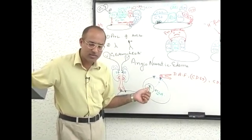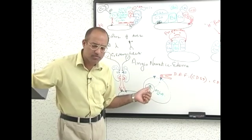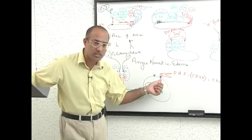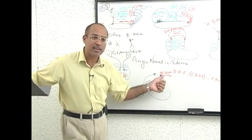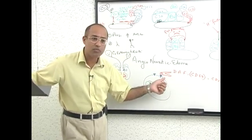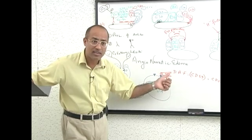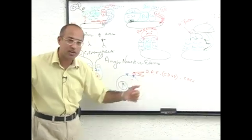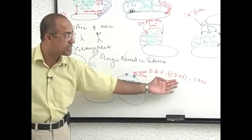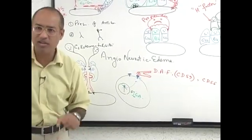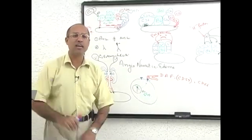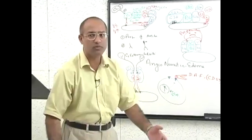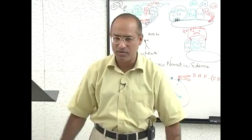Due to the mutation, we are unable to produce those proteins which act as anchors for complement-inhibiting proteins — anchors for Decay Accelerating Factor, CD59, and CD55 are not there. So such RBCs, WBCs, and platelets cannot protect themselves against the hostile complement.